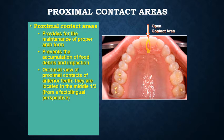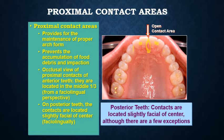From the occlusal view, the contact areas of anterior teeth are in the middle one-third, while in the posterior teeth the contacts are slightly facial to the facial-lingual dimensions.